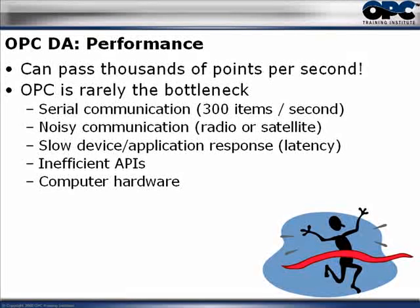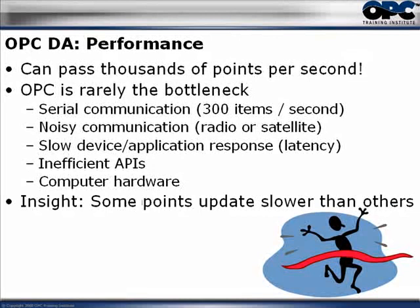Noisy communication, latency, or inefficiencies will cause a slowdown that appears to come from the OPC server itself, but OPC will not be the bottleneck — the bottleneck will be elsewhere. Computer hardware can also be an issue. Just remember: some points update slower than others — temperatures and levels don't typically update nearly as fast as flows and pressures.